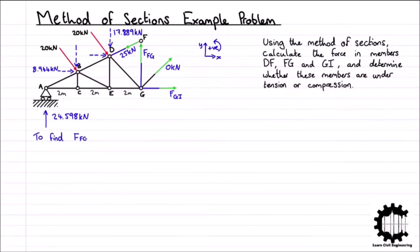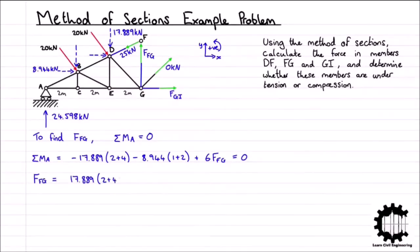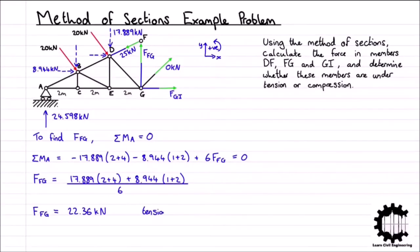To solve the internal force in member FG, we take moments about node A equal to zero, as this eliminates unknown FGI. Taking anticlockwise as positive, the sum of moments about node A equals: −17.889×(2+4) − 8.944×(1+2) + 6·FFG = 0. Rearranging, FFG = 22.36kN. Since we assumed the internal force in FG to be tensile and the value is positive, the force of 22.36kN in member FG is tensile.